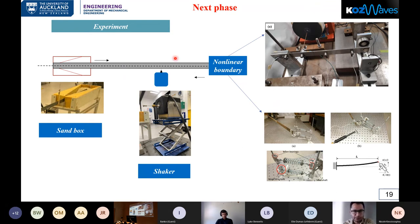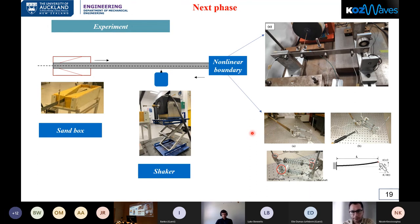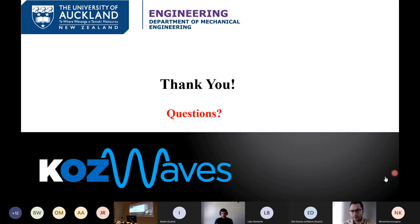Finally, the next phase of the project involves experimental validation in the dynamic and control lab at the University of Auckland. We plan to use a sandbox to fix the end of the beam, reducing wave reflections, and a shaker for excitation. For the non-linear boundary, we may use a magnetic field or two parallel springs — or possibly both — to validate the results experimentally. Thank you for your attention, and I welcome any comments.